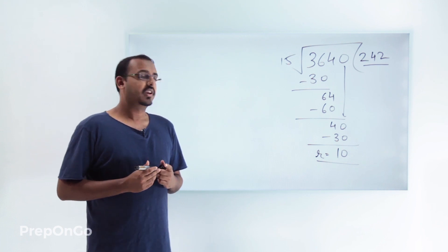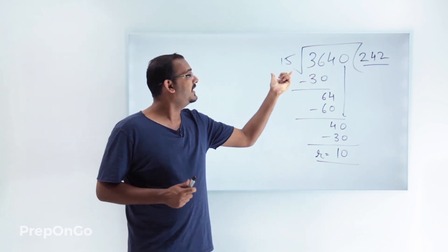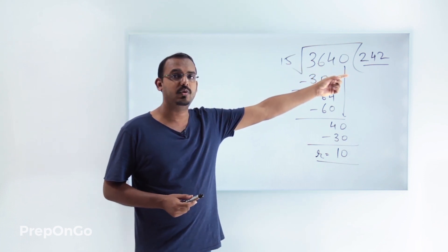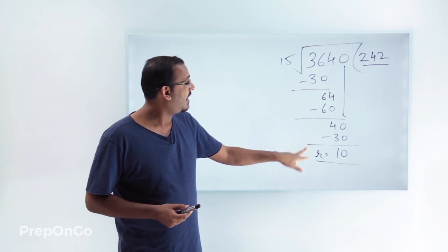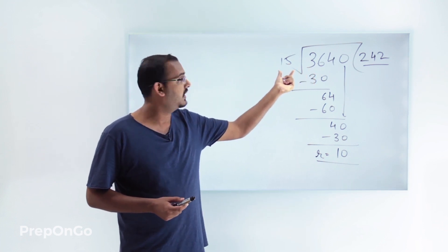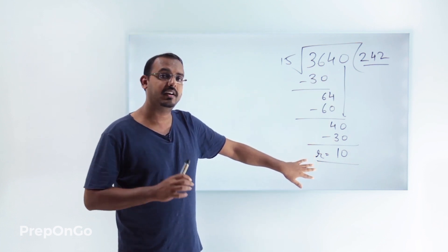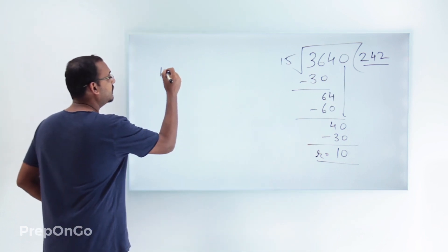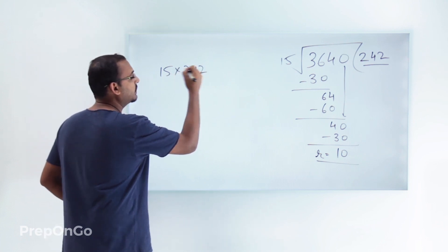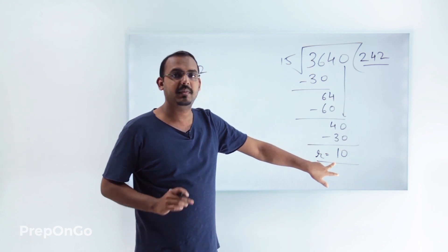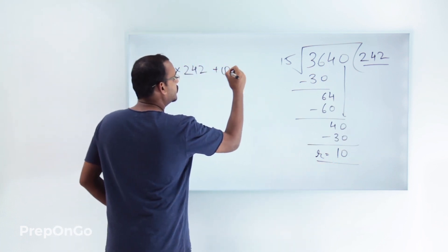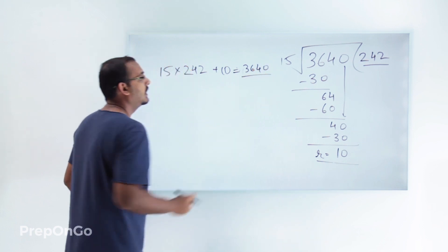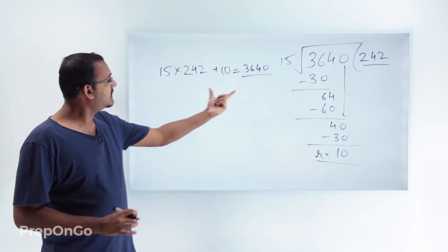Now what have we done here? We have divided 3640 by 15 to get the quotient as 242. If we multiply 15 into 242 and add the remainder 10, because after dividing 3640 by 15 and getting the quotient as 242 we were left with remainder 10, I can rewrite this whole process as: 15 into 242 plus 10 should give me back the original number, which is 3640. So if you think about it logically, this is just the same division process.